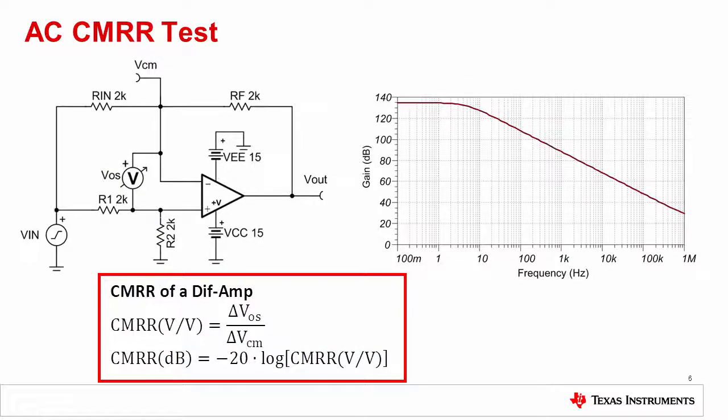AC common mode rejection is simulated using the same test circuit that was used for DC CMRR. To get the best results, make sure that the test conditions, such as load resistance, are observed.